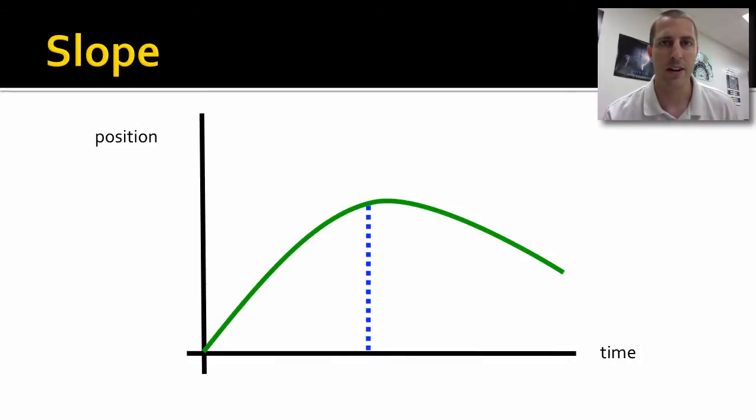But what if we have a curve? Finding the slope of a curve is harder. We have to find the slope at a point. Here we're trying to find the slope where that dotted blue line hits the green line.